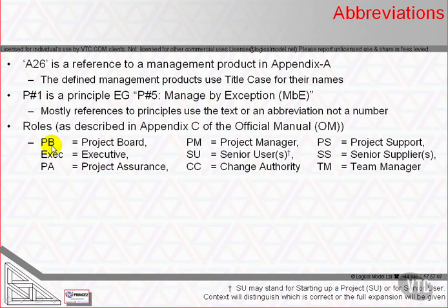Role titles may be abbreviated. For example, PB for Project Board, PM for Project Manager, PS for Project Support. This will be mainly in diagrams where space is at a significant premium. Note that SU could be Senior User or it could be Starting Up a Project — context will always make it clear, or I will give the full explanation.